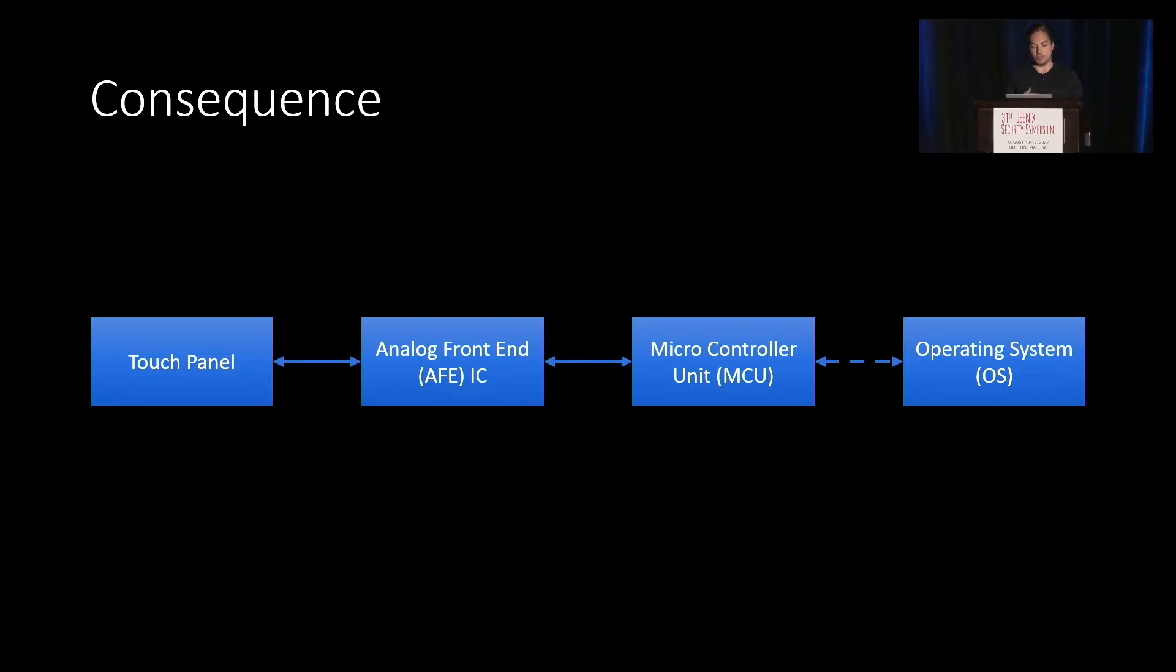The OS is then interpreting it further, for example, as swipes or multi-touch touches. So you can see that interference on the left side, on the physical side, will lead to wrong output on the digital side.